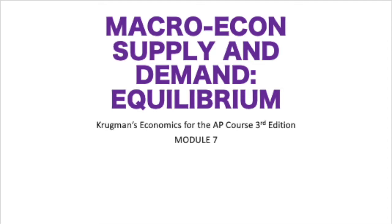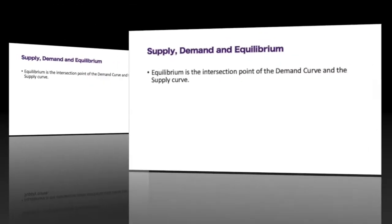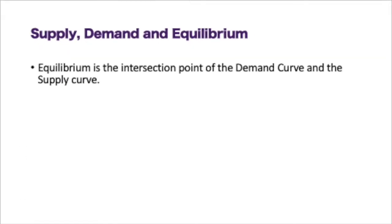This is Mr. Jaeger. Today we're going to be talking about supply and demand equilibrium. If you're reading Krugin's Economics for an AP course, the third edition, this will be module 7. This is the perfect video if you're taking an AP course or an introductory macroeconomics course. Our equilibrium is going to be the intersection point of the demand curve and the supply curve — this is where supply and demand meet on the graph.